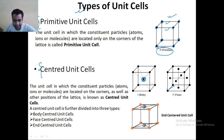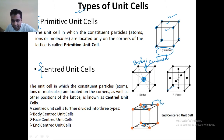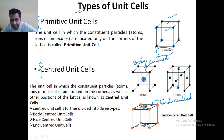If the constituent particle is also present at the center only, then it will be known as your body centered unit cell. And if the constituent particles are present on the end faces, then these are known as your end centered. If the constituent particles are present on the faces, it is known as your face centered. So, different matter has a different kind of unit cell.